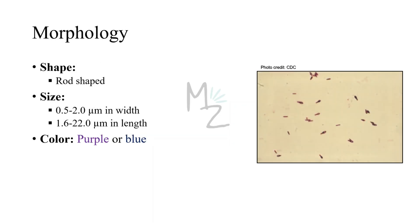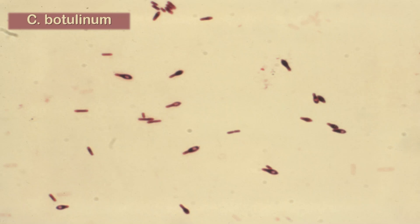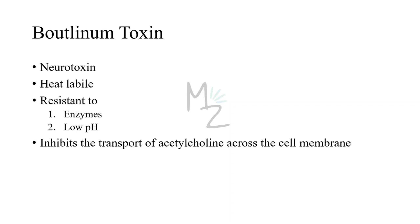Morphology: this bacterium is rod-shaped, as you can see in the picture. In terms of size, it varies in width from 0.5 to 2 micrometers and in length from 1.6 to 22 micrometers. It is purple or blue in color because, as a gram-positive organism, its thick peptidoglycan layer retains the dye. This bacterium is encapsulated, motile, forms spores, and produces the botulinum toxin. You can clearly see the rod-shaped bacterium and the spore inside it — this is how C. botulinum looks under the microscope.